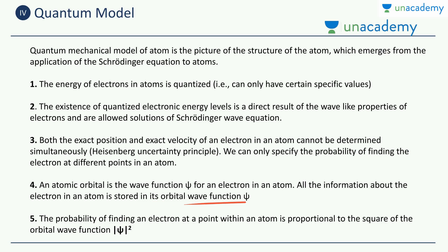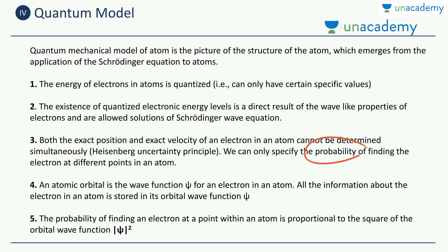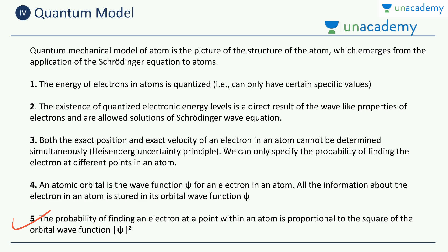The fifth point gives us the probability distribution. The probability of finding an electron at a point within an atom is directly proportional to the square of the wave function, which is ψ² (psi squared). We cannot be 100% certain that an electron is present at some place; we can only assign probabilities. So the probability of finding an electron in a given space is directly proportional to ψ².